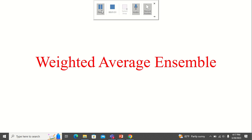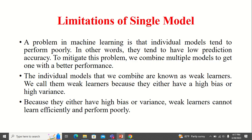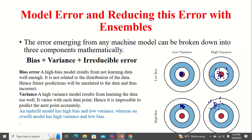So your model's performance will be affected because of these two factors — bias and variance. If you take any machine learning model, there are always limitations in creating a single model. Maybe that model is a weak learner and has high bias or high variance. A model which is not learning perfectly will definitely suffer from bias error — it will have high bias.